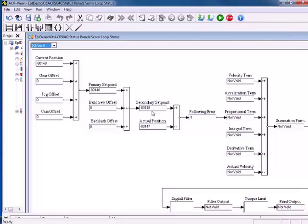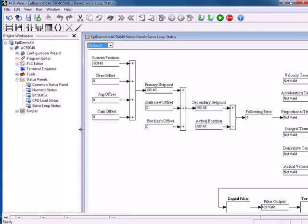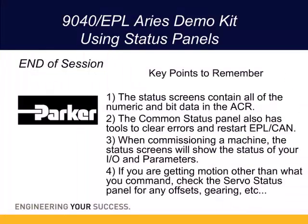That concludes our session for the status panels. This has been the 9040 EPL ARIES Using Status Panels. Key points to remember are that the status screens contain all of the numeric and bit status in the ACR. The common status panel has tools to clear errors and restart the EPL and CAN open networks. When commissioning a machine, the status screens show you the status of your I/O and parameters. If you're getting motion other than what you command, check the servo status panel for any offsets, gearing, etc. Thank you for your attention and I hope this has been of use to you.